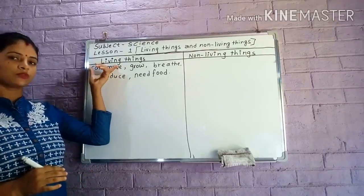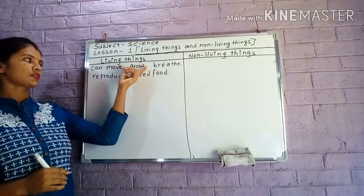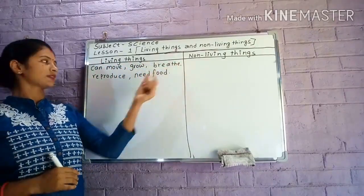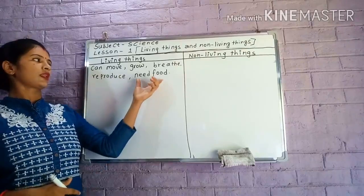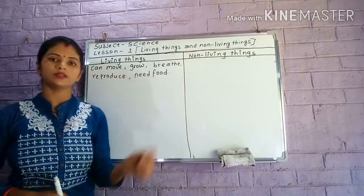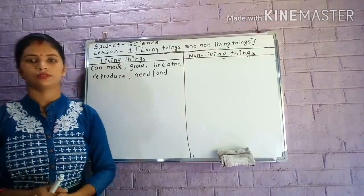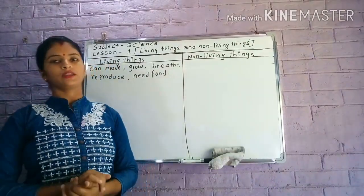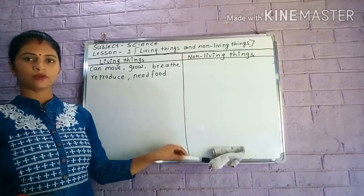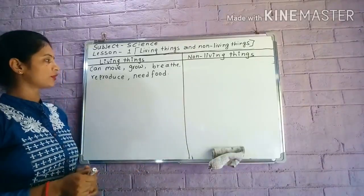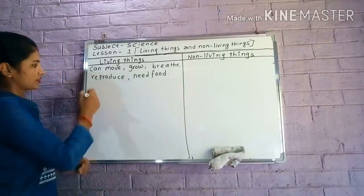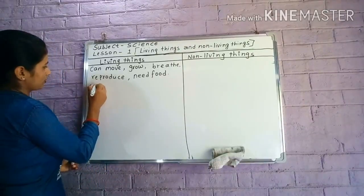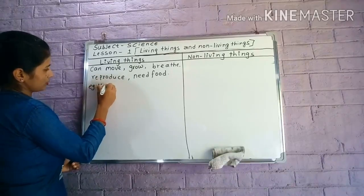Living things can move. Living things grow. Living things can breathe. Living things can reproduce. Living things need food. Then I am showing you one example. The example is human beings.